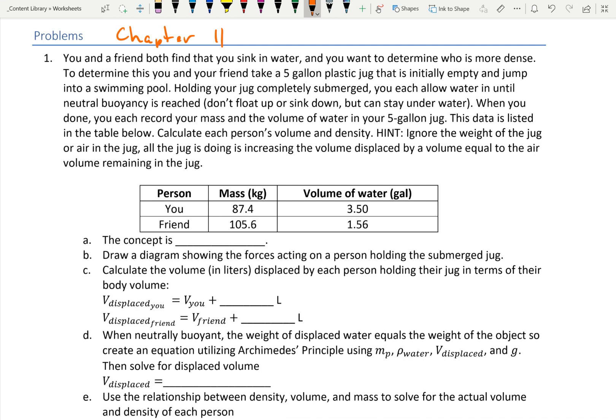Chapter 11 worksheet problems. We have two here. The first one has to do with measuring your body's density. So you and a friend both find that you sink in water. And you want to determine who is more dense. In this case, we're meaning density, not anything to do with intelligence.